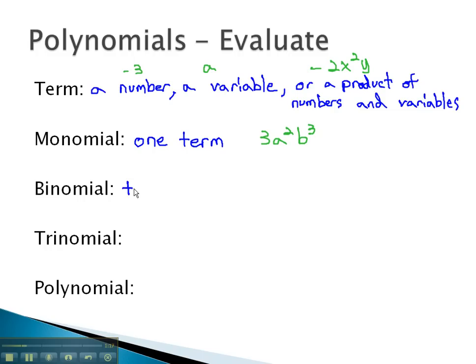Binomial, prefix bi meaning 2, has two terms. An example of a binomial would be something like a squared minus b squared. Notice the two terms are separated by a subtraction. Addition and subtraction is what separates terms.